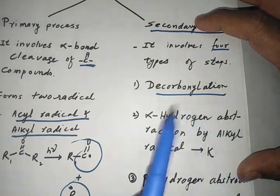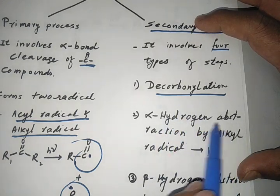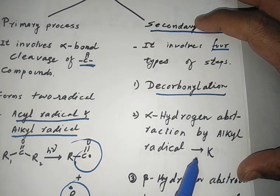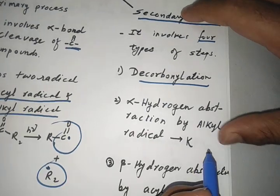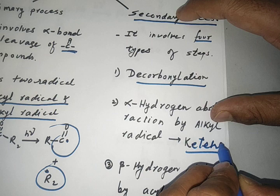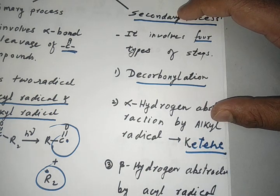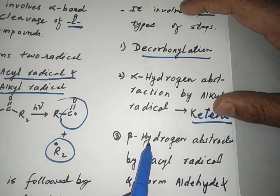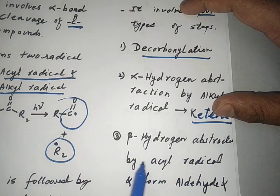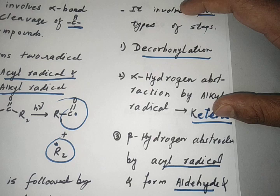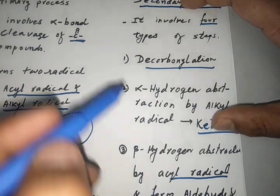Another step in the secondary process is that the two radicals interchange alpha hydrogen — that is, there is abstraction of alpha hydrogen by the alkyl radical — forming a very important intermediate called ketene. Similarly, beta hydrogen abstraction takes place by the acyl radical, forming two compounds: an aldehyde and an alkene.